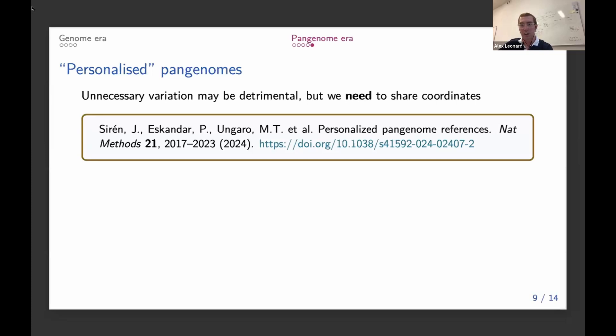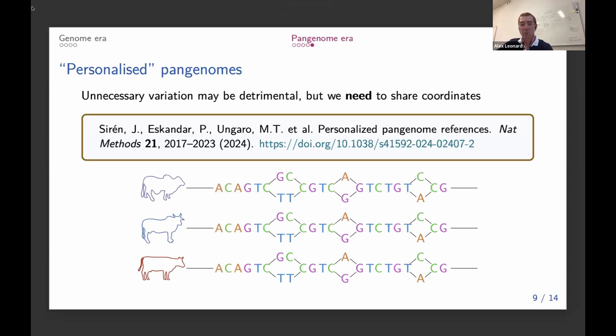But the key thing is we really want some way that we can reference the same location across different graphs. And this is a very recent and very unexplored idea called personalized pangenomes. The rough idea is that we would start for many different samples with the same large complicated graph, and then we would basically remove pieces from the graph that were not relevant to that specific sample or that specific breed.